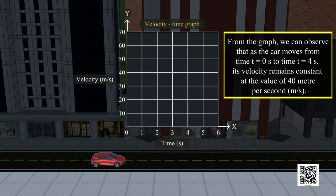From the graph, we can observe that as the car moves from time t equals zero seconds to time t equals four seconds, its velocity remains constant at the value of 40 meters per second (m/s).